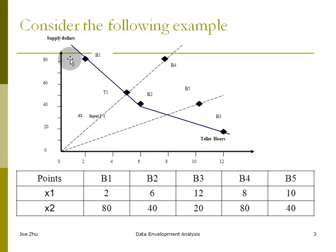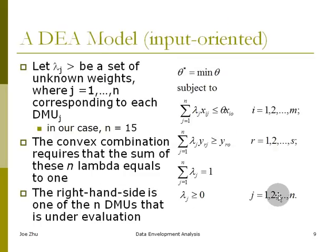So you have the supply dollars and you also have the number of teller-hours. So what you need to do is you actually want to reduce the supply dollars or to reduce the teller-hours. So the ones that are closer to this area, they have a better performance. That's why this B4 is inefficient because you can find a convex combination that has a better performance than B4. Now for B1, you can't find any convex combination that has a better performance than B1. That's why B1 is efficient and also B2 is efficient and B3 is efficient. And for B5, you can find a convex combination between B2 and B3, which is right here, which has a better performance than B5. That is why B5 is inefficient.